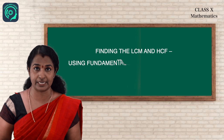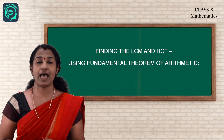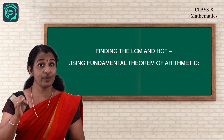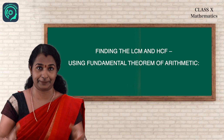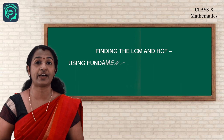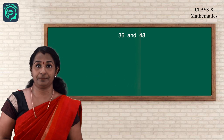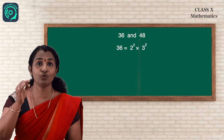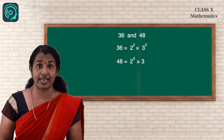After learning this Fundamental Theorem of Arithmetic, you will be able to find out the LCM and HCF of given numbers. LCM stands for Lowest Common Multiple, and HCF stands for Highest Common Factor. Let us take an example: 36 and 48. 36 can be written as 2² × 3², and 48 can be written as 2⁴ × 3.